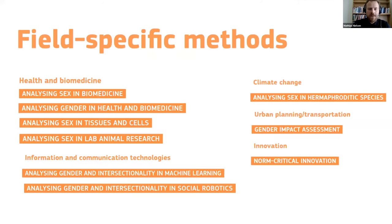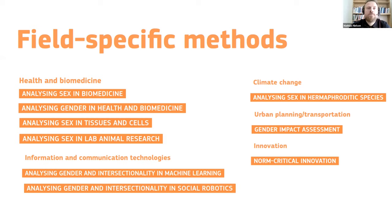The Gendered Innovations Project includes a number of field- and discipline-specific methods that provide more detailed instruction on how to consider sex, gender, and intersectionality in research. In health and biomedicine, these include sex and gender analysis in biomedicine and health research, sex analysis in research on tissues and cells, and sex analysis in lab animal research. In the domain of information and communication technologies, we cover gender and intersectionality analysis in machine learning and social robotics. We also have specific methods in the domains of climate change, urban planning, and innovation.